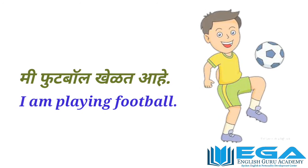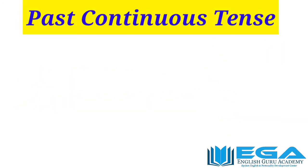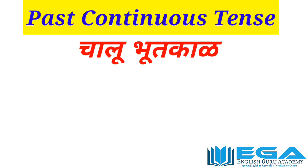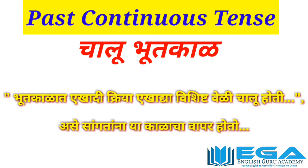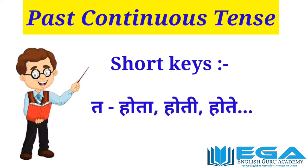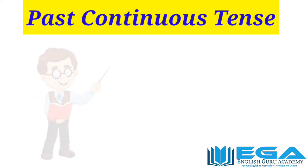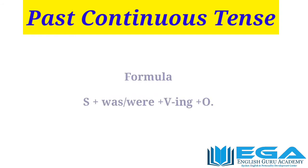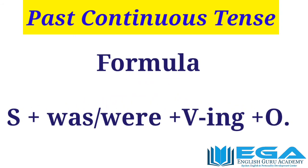The next tense is past continuous tense — in Marathi, 'chalu bhutkal.' This tense is used to express an action that was ongoing at a specific time in the past. Marathi sentences in this tense end with words like 'hota,' 'hoti,' or 'hote.' In English, the structure is: Subject + was/were + verb+ing + object.